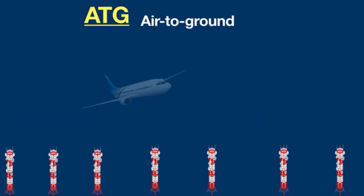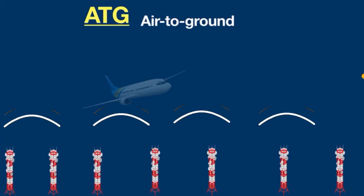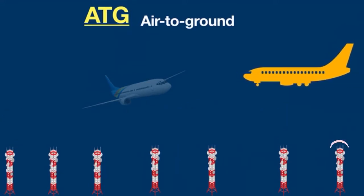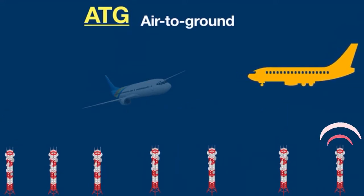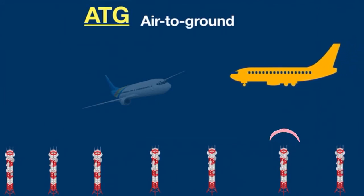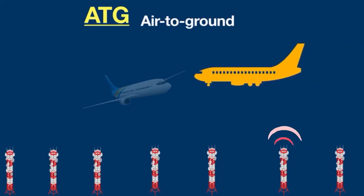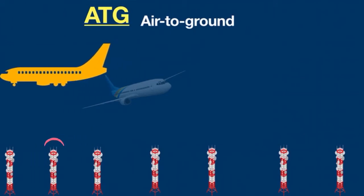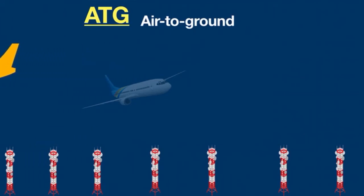Towers project wireless signals by pointing toward the sky. As the aeroplane travels, it simply connects to the nearest tower on a rolling basis. The aeroplane becomes a hotspot so passengers can connect to a Wi-Fi router.